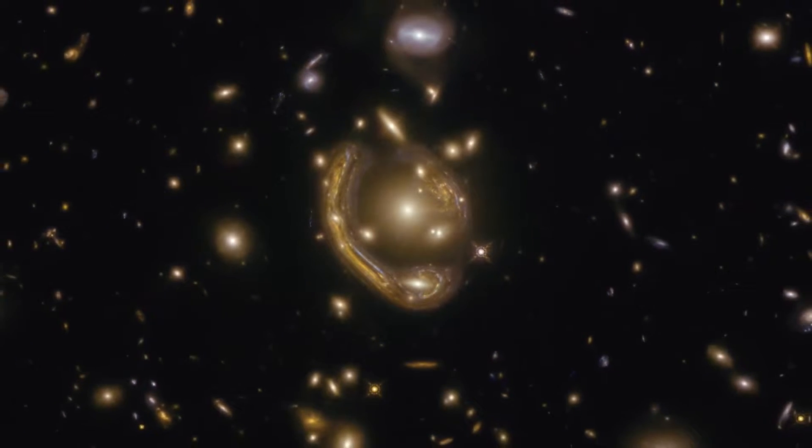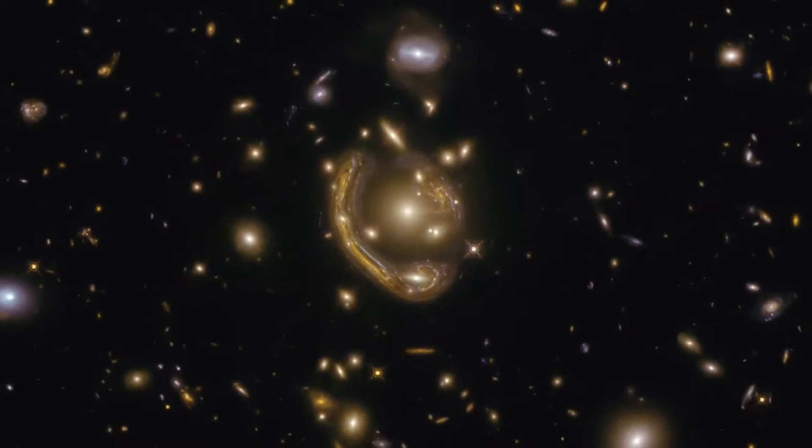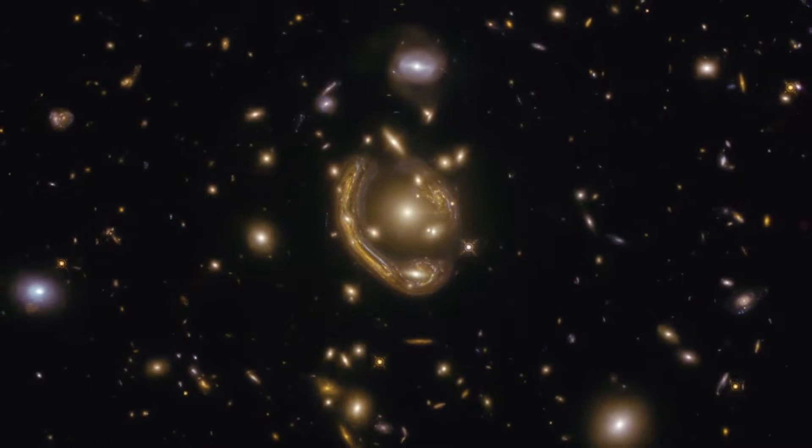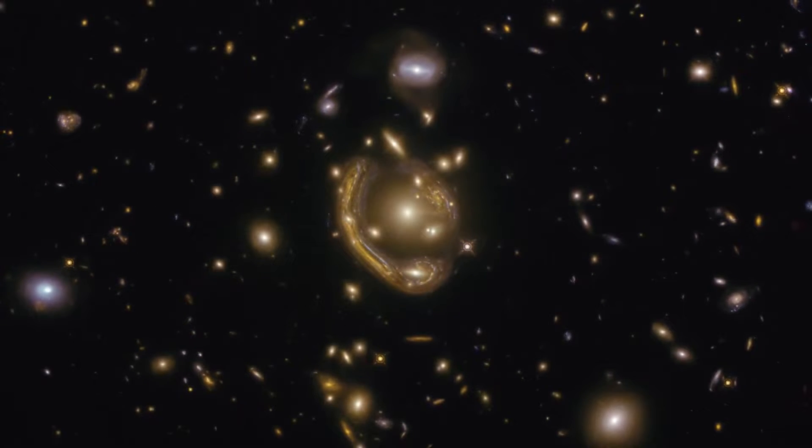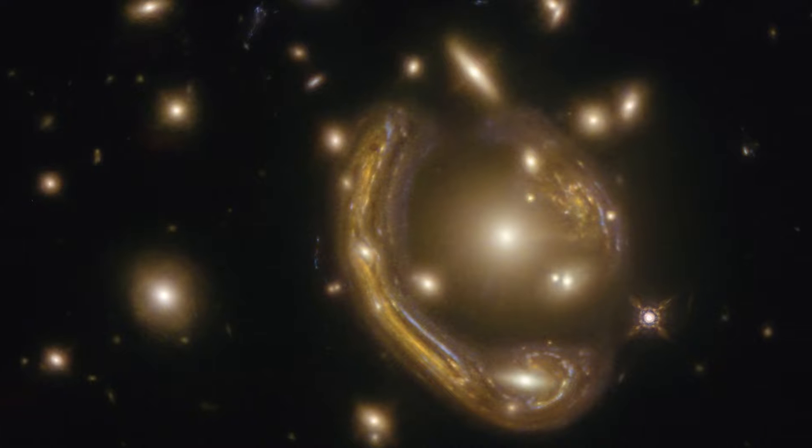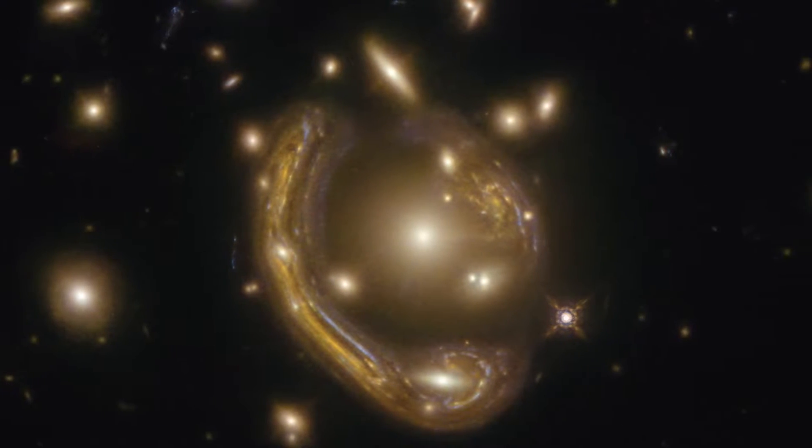This image, taken with the Hubble Space Telescope, shows a distant galaxy located in the constellation Fornax. It is the largest and one of the most complete Einstein rings ever discovered.